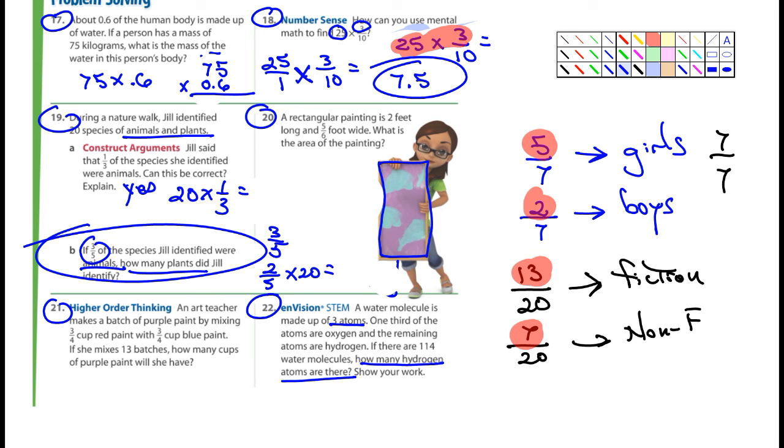Because it says how many plants, so you're going to have to give a specific number, not a fraction. So what's left over is 2/5. So it would be 2/5 times 20. All right, number 20 here. It says a rectangular painting is 2 feet long and 5/6 foot wide. What is the area of the painting? Area equals what? Length times width. So length, it's going to be 2. Width is what? 5/6. So 2 times 5/6, and you'll get the area.